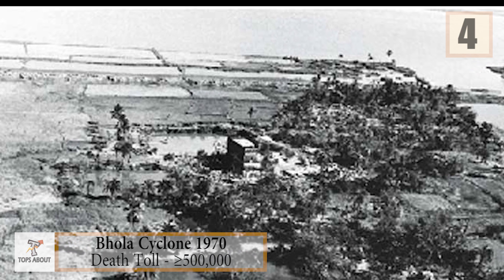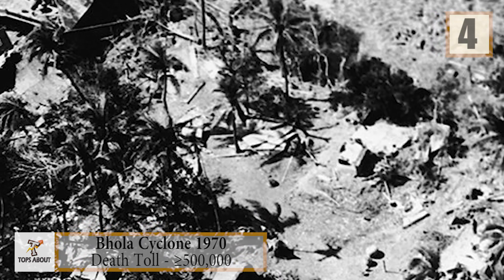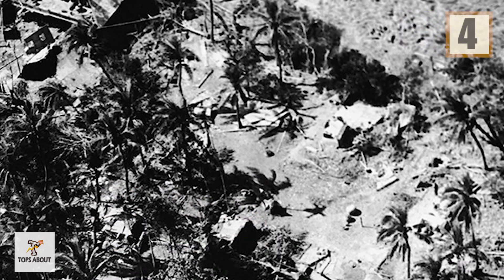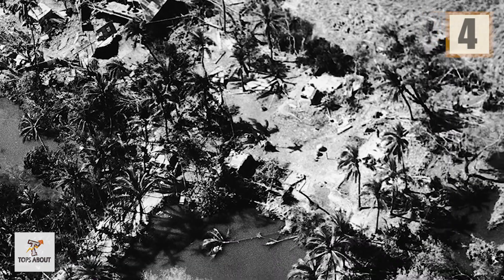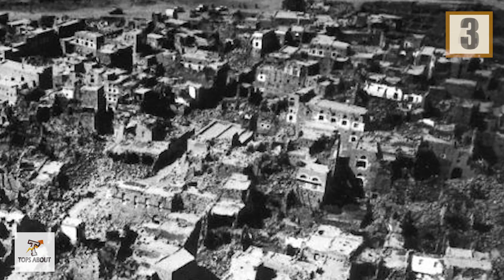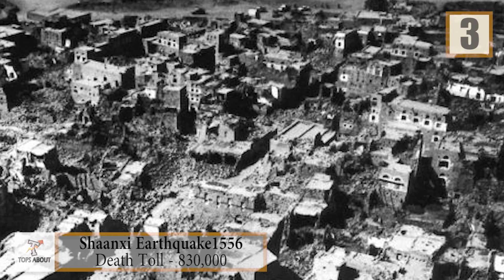Number 4: 1970 Bhola Cyclone. The 1970 Bhola cyclone was a devastating tropical cyclone that struck East Pakistan and India's West Bengal on November 12, 1970. It remains the deadliest tropical cyclone ever recorded and one of the deadliest natural disasters in history.